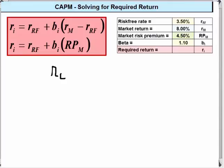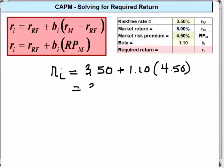We want to solve for the required return, RI. We know the risk free rate is 3.50, beta is 1.10, and using the market risk premium of 4.50. That simplifies to 3.50 plus 4.95.